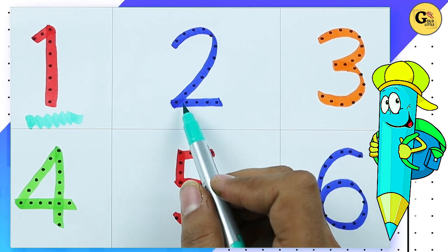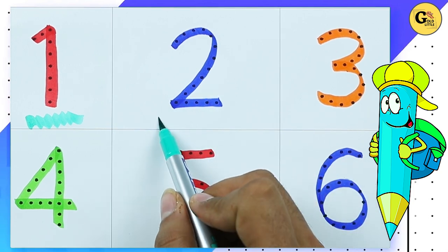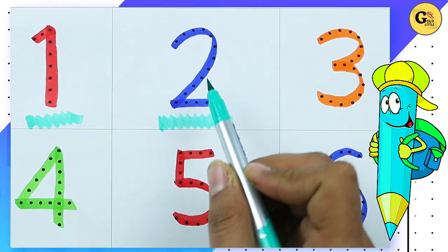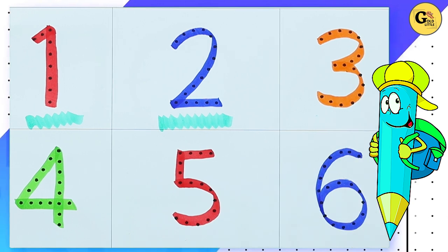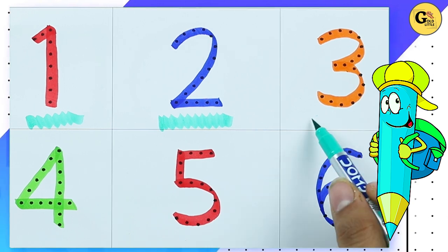Which color is this? Tell me. Yes, right. It's blue color. Number 2. Which color is this? Orange, right. It's number 3.